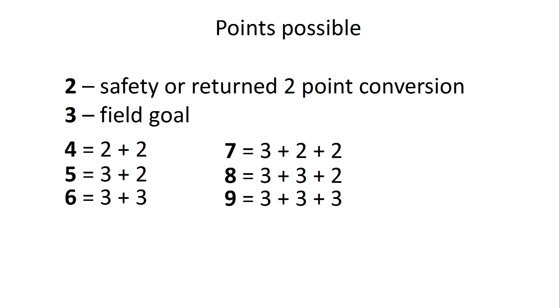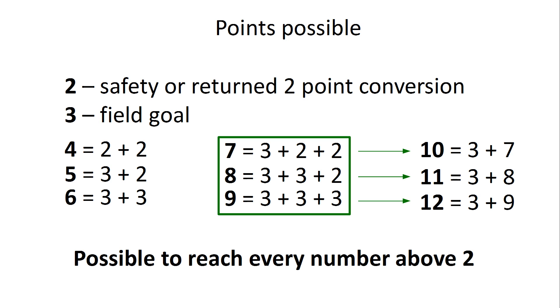We can repeat this process. If we consider the triplet 7, 8, and 9, if we add 3 points to each one of these equations, we'll find out a team can score 10, 11, and 12 points. Now we can clearly repeat this process, and we can show that it's possible to reach every single point total that's larger than 2.